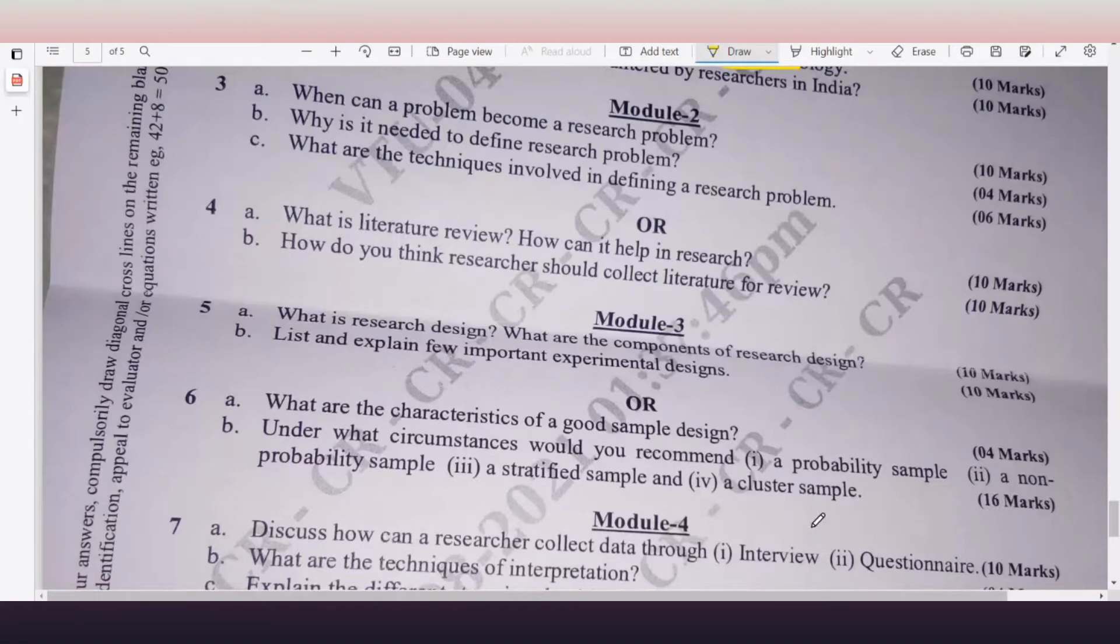6b: Under what circumstances would you recommend: first one is a probability sample, second is a non-probability sample, third is a stratified sample, and fourth is a cluster sample.